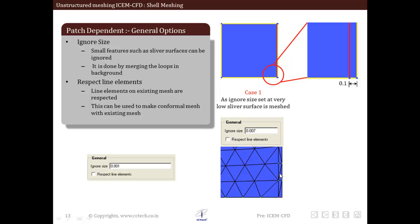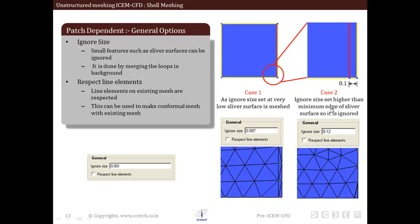Within this gap sliver surface, we are seeing mesh that is different from the remainder surface. But if we set the ignore size higher than the minimum edge of sliver surface, we can see that the sliver surface gap is ignored and we see a continuous mesh.